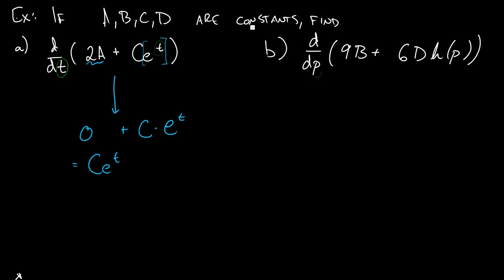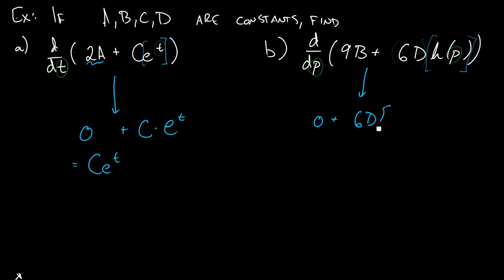In this example, p is the variable, and everything else is a constant. The derivative of 9d is 0, since 9 times a number is still a number. For 6d·ln(p), the factor 6d is one giant constant, and the derivative of ln(p) is 1/p, so we get 6d times 1/p, which simplifies to 6d/p. The big idea: just treat the constants as numbers, take the derivative as you normally would, and remember they are fixed values.